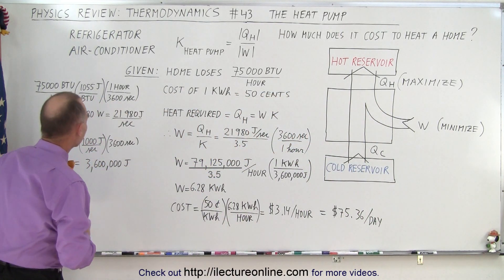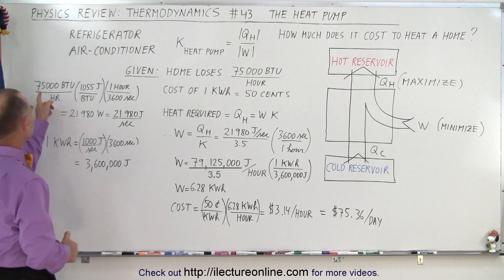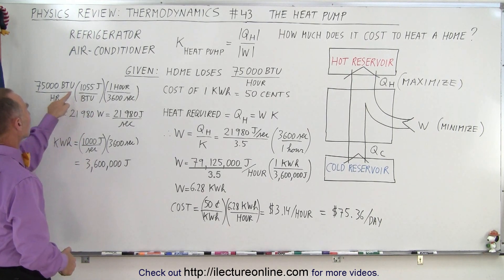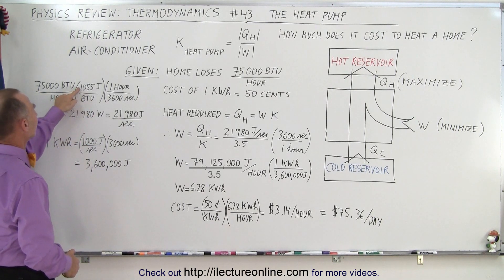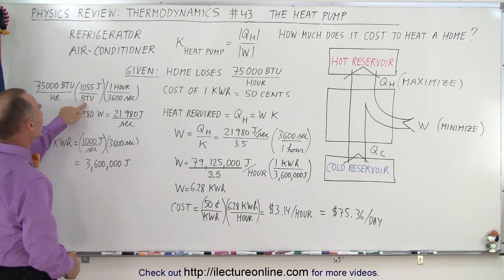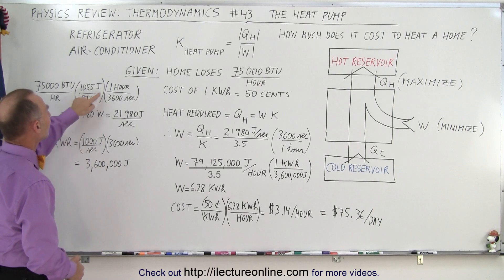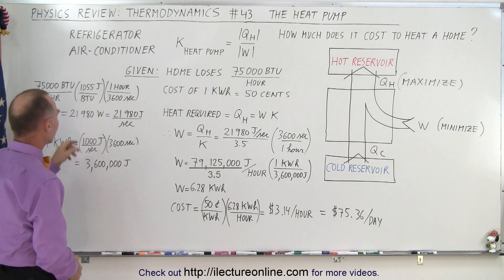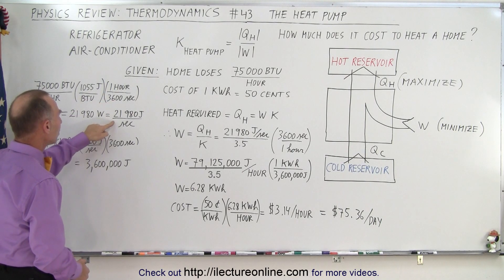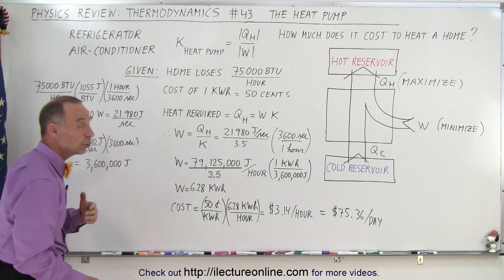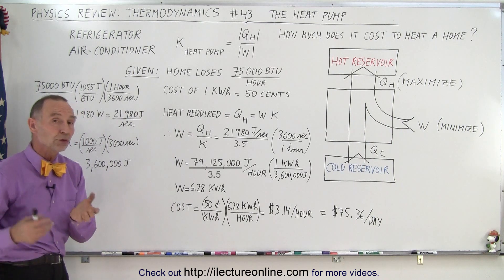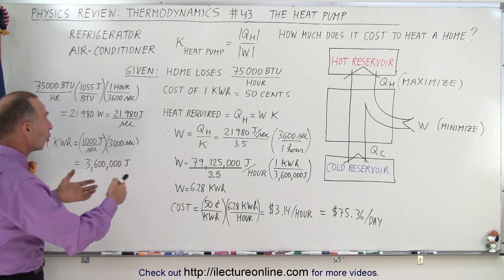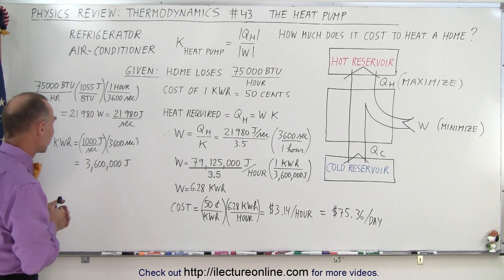So we do need to convert a few things. 75,000 BTUs per hour is 1,055 joules per BTU times an hour being 3,600 seconds. So essentially, we need almost 22,000 joules of energy per second to keep the home at a constant temperature.